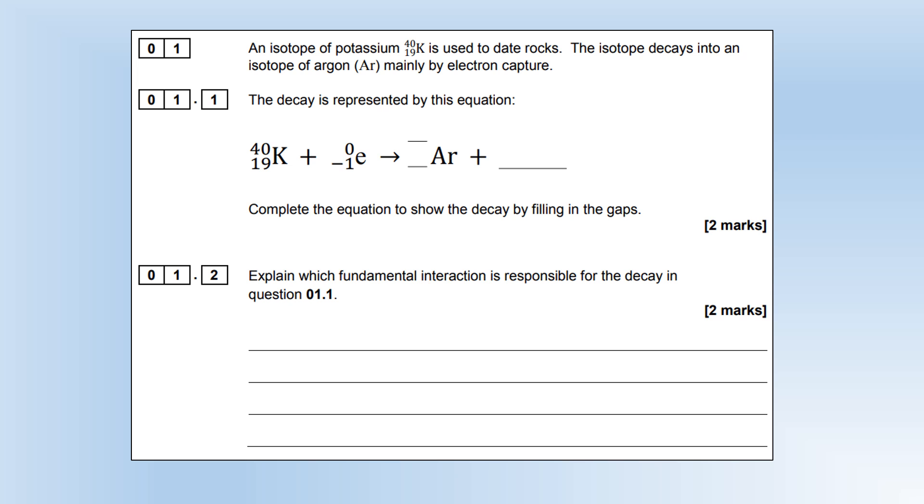All right, so in this video we're going to look at Section A of the 2017 AQA Paper 1. We're just looking at Section A in this video; the other sections will follow soon. We've got a nice isotope of potassium, K-40-19, and we use that as a way of dating rocks in a similar way to carbon dating. The K-40 produces argon by a process called electron capture.